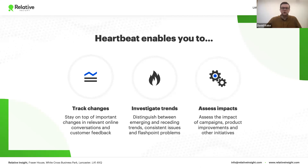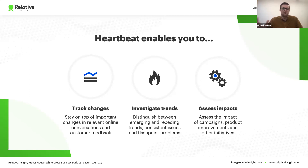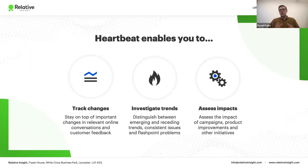Third, Heartbeat is a great tool for assessing and quantifying the impact of campaigns, product improvements, and other strategic initiatives. As a time-based tracking tool, you can plot the date a change was made — for example, an improved product formulation — and look to see whether the theme you've defined around good quality is trending in a positive direction. This allows you to assertively quantify impact in a way that previously relied on anecdotes and gut feel.